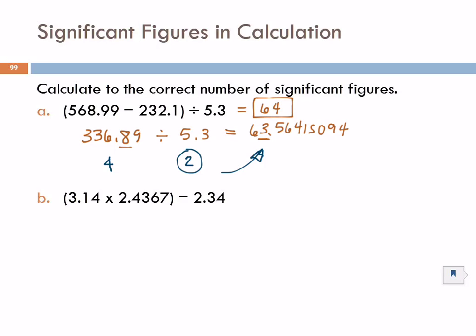Let's do this next example. Here we have two numbers that are multiplied. And then we're supposed to take that quantity and subtract 2.34. So again, we have mixed operations. There's a different rule for multiplying than there is for subtracting. And so we have to look at each operation separately and identify significant figures. So inside the parentheses, we have 3.14 times 2.4367.